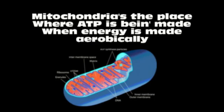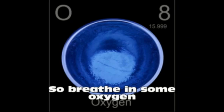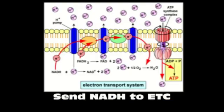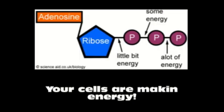Mitochondria is the place where ATP is being made, when energy is made aerobically. So breathe in some oxygen and let the Krebs cycle begin. Send NADH to ETC — your cells are making energy.